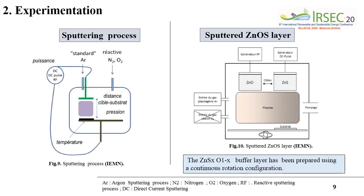All sputtered films were deposited using an argon flux, while deposition pressures were controlled using a butterfly valve. Sputtering leads to good deposit uniformity over large surfaces and high deposition rates, while keeping low fabrication costs.